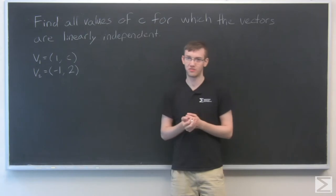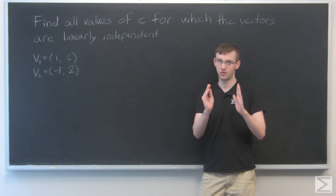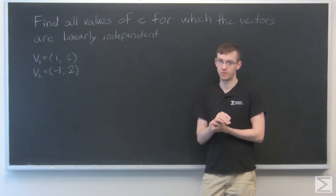But the formal way to go about finding this, or one of the formal ways, would be to put them into a matrix where they're the column vectors, and then find the determinant of that matrix.